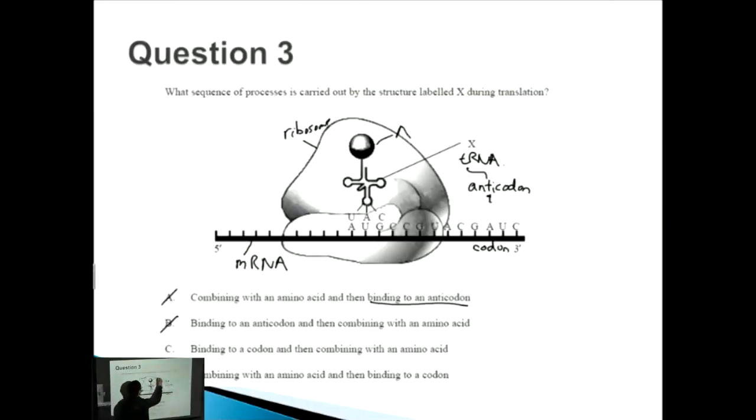It has to bring this amino acid - it has to attach onto that first and then it travels towards the codon, towards the ribosome, and brings that amino acid in. So C is incorrect because it's not the right order. The right order is D: it combines first with the amino acid, then brings it over to the mRNA and the codon, and then causes elongation of the polypeptide.